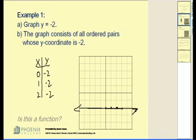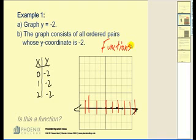Now, is this a function? Remember, the function test is: does this pass the vertical line test? It is not possible to draw a vertical line that crosses this graph in more than one point. So yes, it is a function. In fact, every horizontal line will be a function.